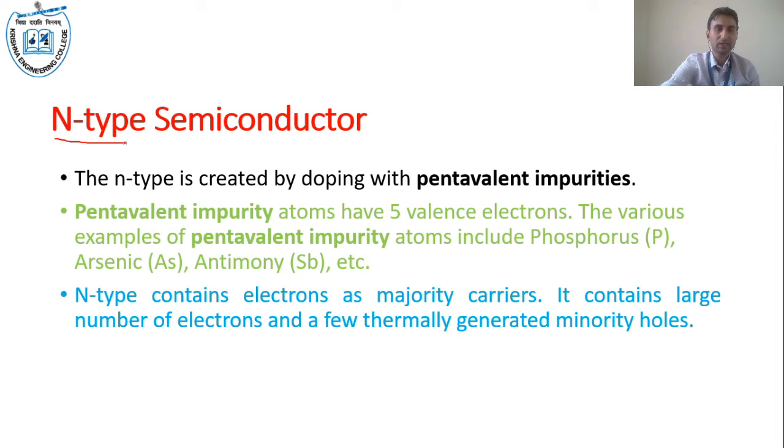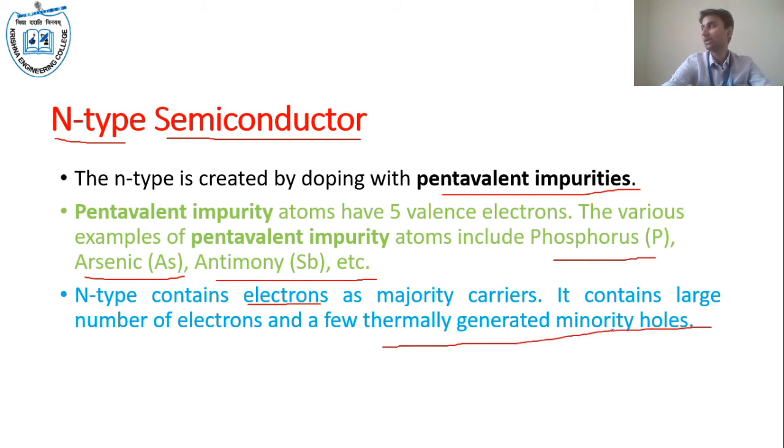N-type semiconductor is created when we add pentavalent impurity. Pentavalent impurity means it has 5 valence electrons. Examples are phosphorus, arsenic, antimony, etc. N-type has electrons as majority charge carriers. One extra electron becomes the majority, but there are also some thermally generated minority holes. Thermally generated means when we provide heat or potential, some holes are also generated.